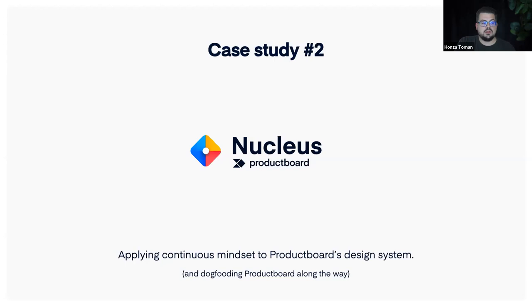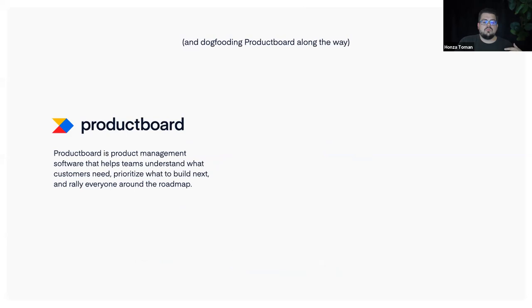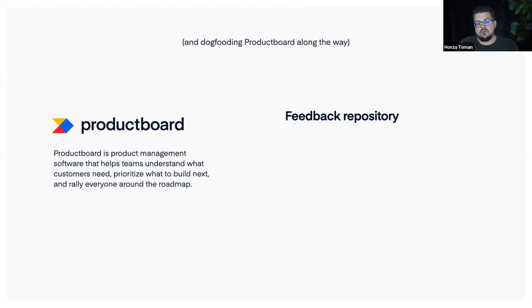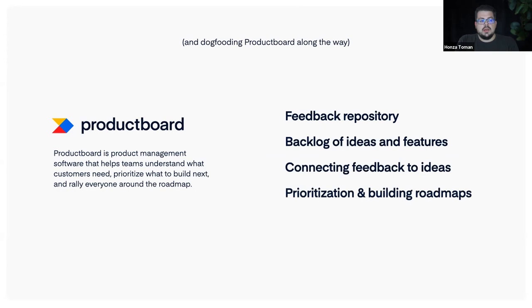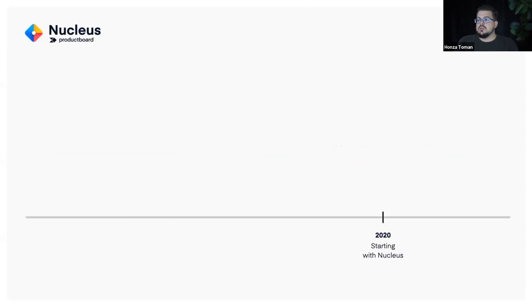Productboard is a product management platform that helps teams and product managers understand what customers need, prioritize things, and create roadmaps. Key features relevant to this talk: a feedback repository, a backlog of ideas and features, the ability to connect feedback and ideas in the backlog, and then prioritize and build roadmaps from those things.